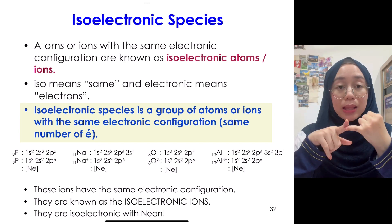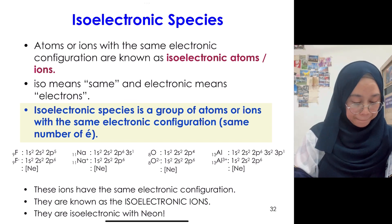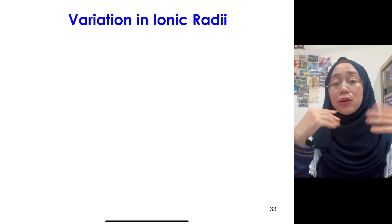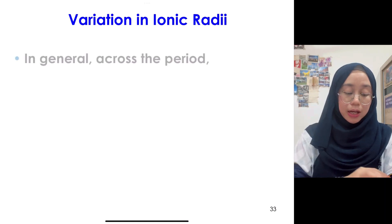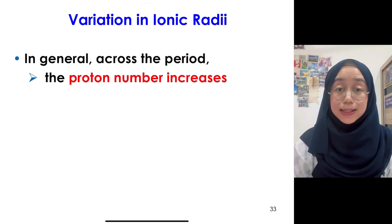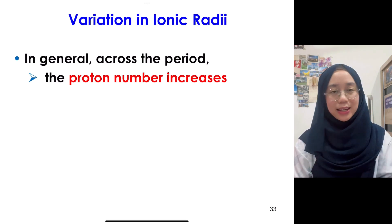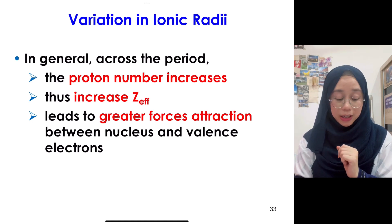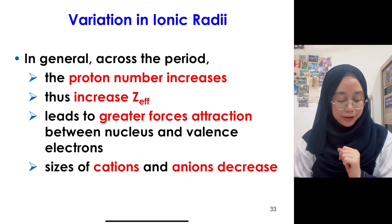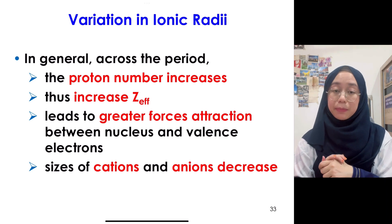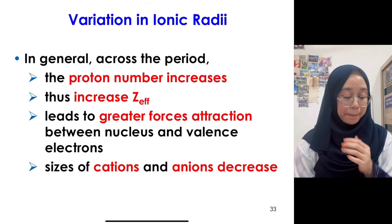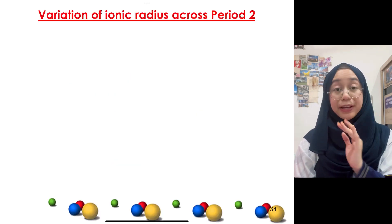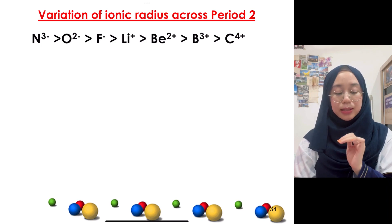Now, variation in ionic radii. This applies generally for both cations and anions. Across the period, the proton number increases — that cannot be changed. Therefore ZEff also increases, leading to greater forces of attraction between the nucleus and valence electrons, so the size of cations and anions decreases. This is similar to atomic radii — we use ZEff to explain ionic radii across the period as well. For Period 2, we look from lithium to fluorine, excluding noble gases.